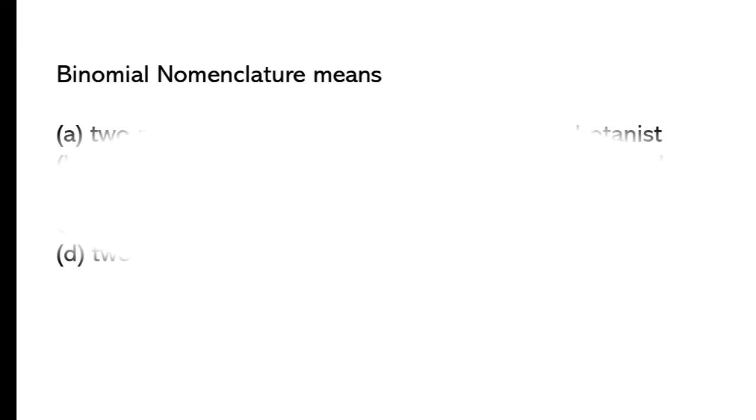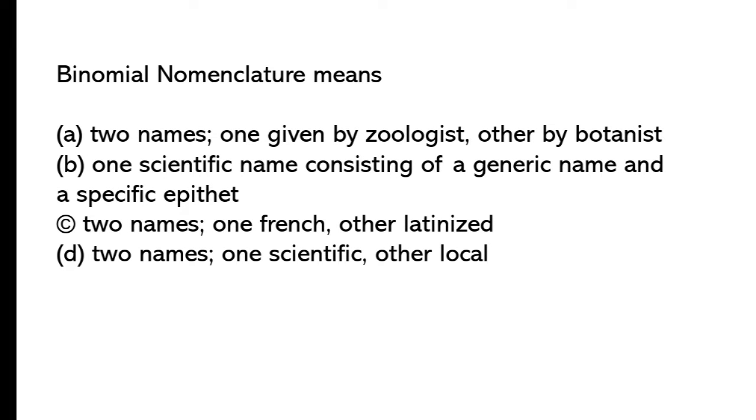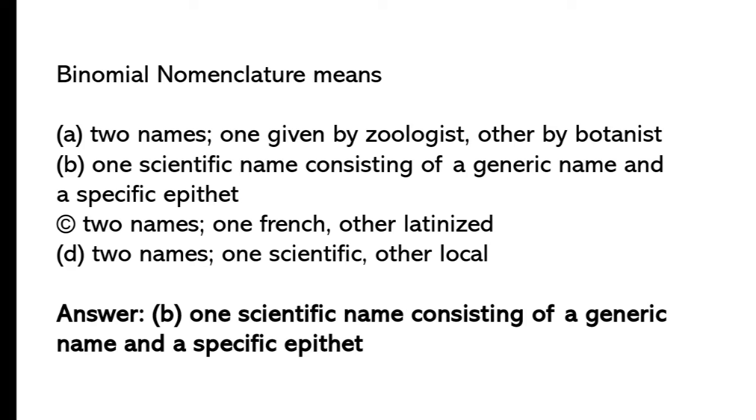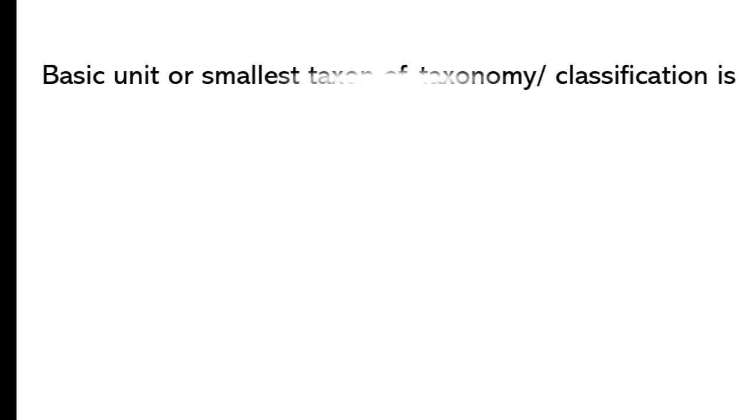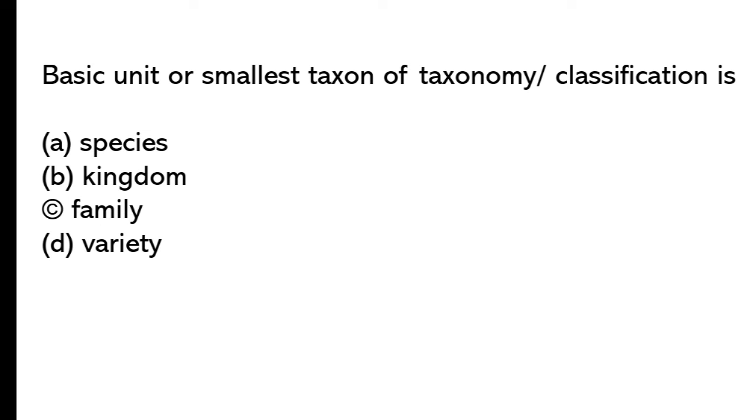Binomial nomenclature means: So the correct answer is option B, one scientific name consisting of a generic name and a specific epithet. Basic unit or smallest taxon of taxonomy classification is: Species, kingdom, family, variety. So the correct answer is option A, species.